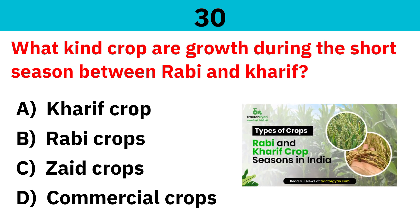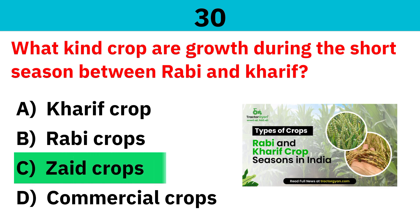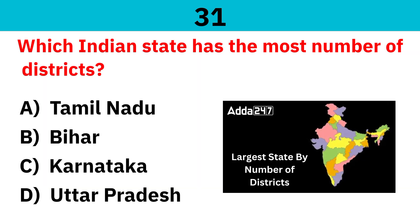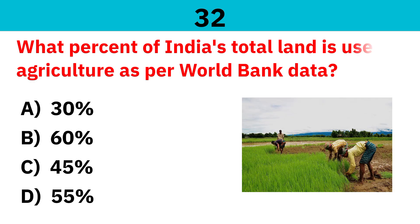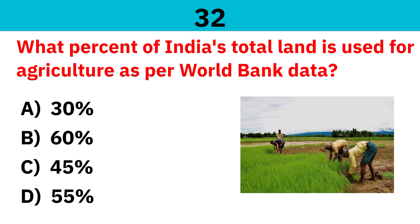What kind of crops grow during the short season between Rabi and Kharif? Correct answer is Zaid crops. Which Indian state has the most number of districts? Correct answer is Uttar Pradesh. What percent of India's total land is used for agriculture as per World Bank data? Correct answer is 60%.